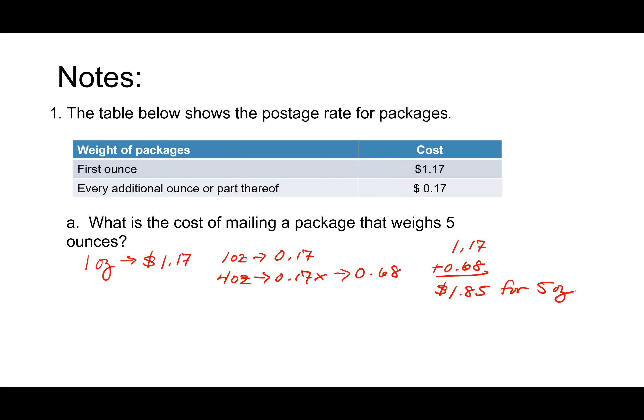And then letter B on that problem says, Theodora paid $2.36 to mail a package. What is the weight of her package? Kala, how'd you solve that one? So you did it this way. You subtracted the first ounce. So let's put that stuff down there. That first ounce is going to cost a dollar 17 and you got $1.19.